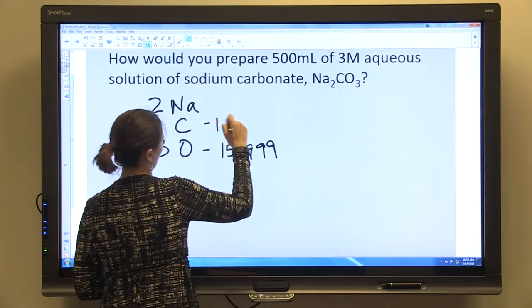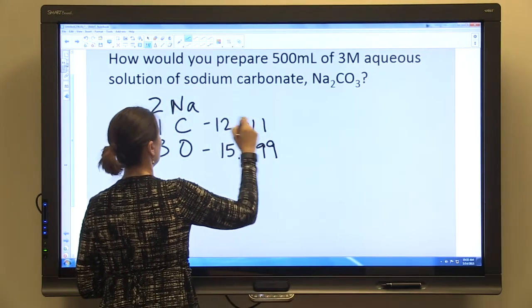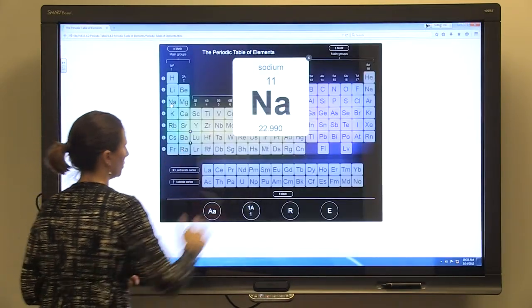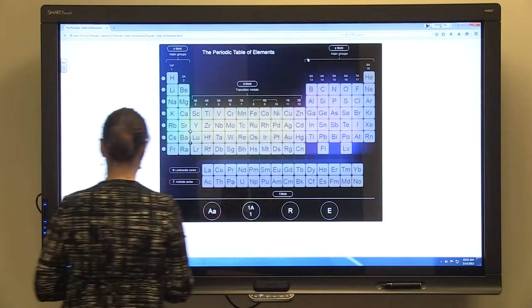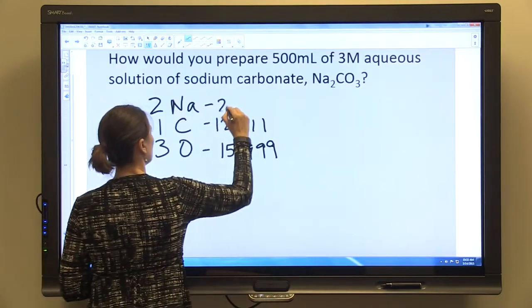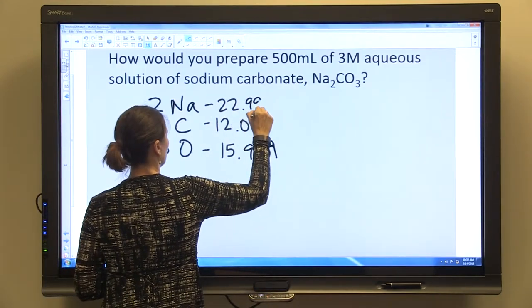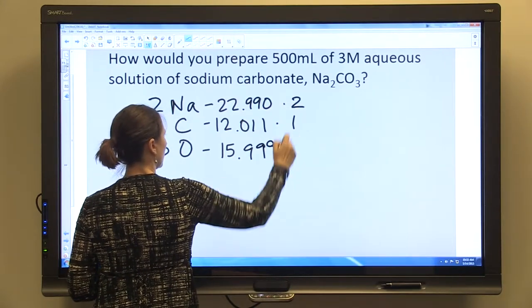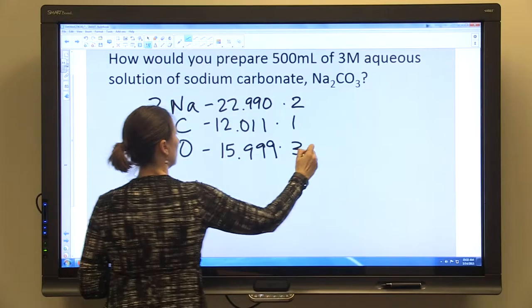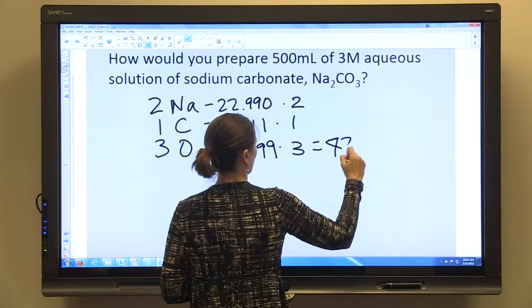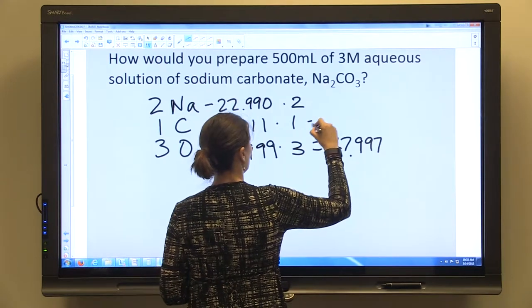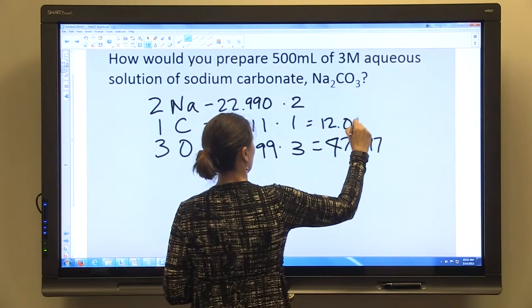So 15.999 for oxygen. Carbon is 12.011. And sodium is 22.990. So we're going to multiply that one by two, that one by one, and this one by three. 47.997 for sodium, 12.011 for carbon.